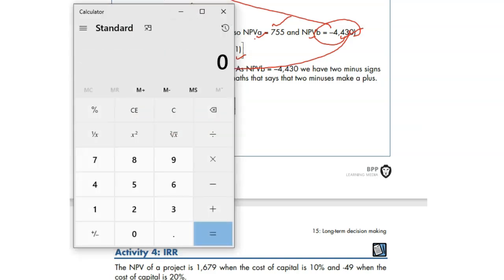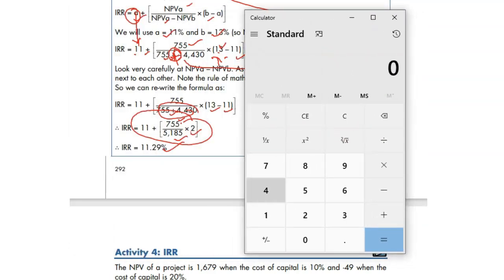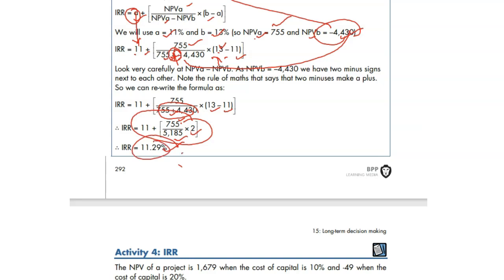Let me take the calculator on screen and do this working for you. 755 divided by 5185 times by 2. You get 0.29 whatever plus 11. If you do, you get 11.2912. That means two decimal places, 11.29 is your IRR.